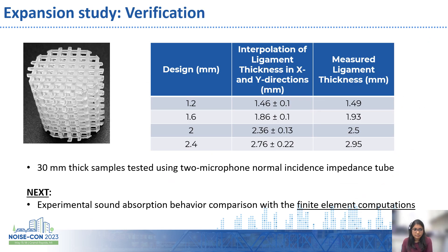To verify the expansion trends, four cylindrical samples with ligament thicknesses of 1.2, 1.6, 2.0, and 2.4 mm were designed and 3D printed. Two values of 1.2 and 2.4 mm are part of the training data, and the other two values of 1.6 and 2.0 mm are not. Using the trends seen earlier, we interpolated the ligament thickness values for 3D printed samples based on the design input along the X and Y directions. The measured values of the ligament thickness fall within the predicted range very closely. These 3D printed cylindrical samples, each with a thickness of 30 mm, were then tested using a two-microphone normal incidence impedance tube setup for the sound absorption behavior.